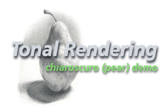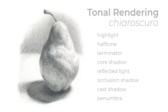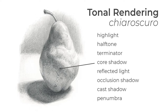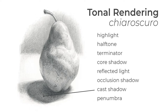Welcome everyone. We're going to take a look at tonal rendering using a pear, talking about light and dark chiaroscuro form. The highlight is the reflection of the light source on your surface. The halftone is the transitional tones and values between light and dark. The terminator is the line representing the border between light and dark. The core shadow is the darkest dark in the shadow on the form. The reflected light bounces off a surface or nearby object, filling in the shadow a bit. The occlusion shadow comes from the idea of 'occlude' or to block — it's the deepest shadow. Cast shadows are cast onto the surface beneath, and the penumbra is the softer edge to the shadow.